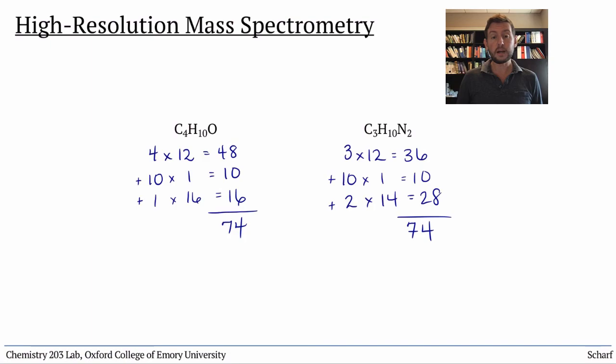C4H10O has a molar mass of 74.123 grams per mole, while C3H10N2 has a molar mass of 74.127 grams per mole.